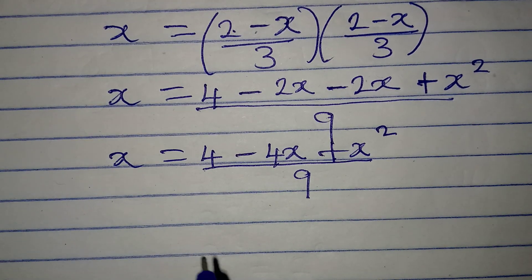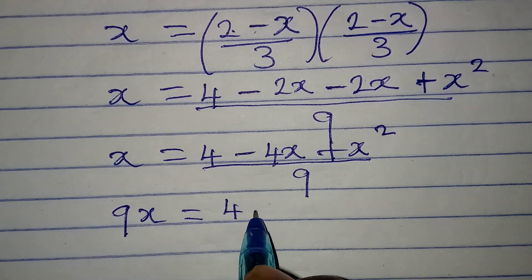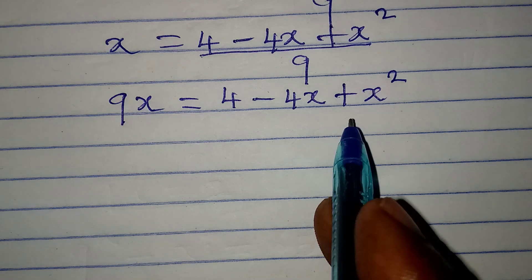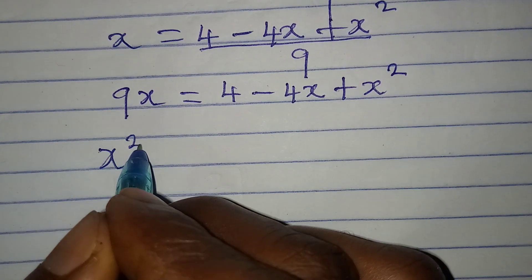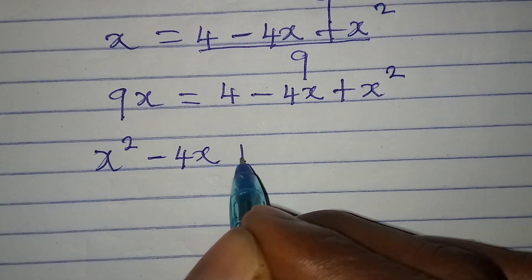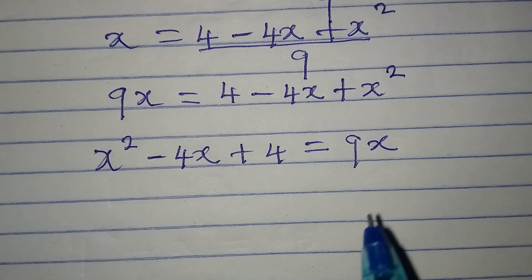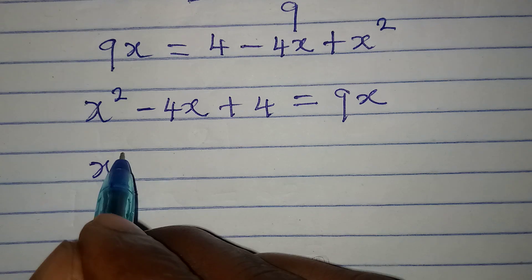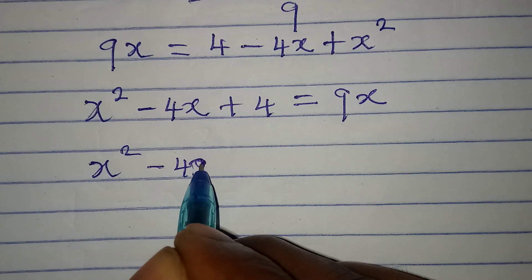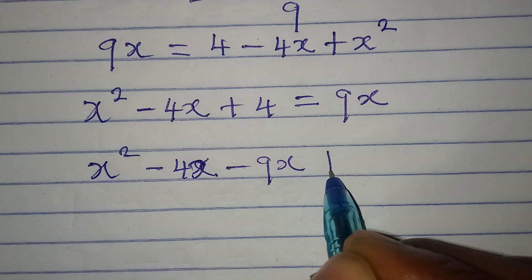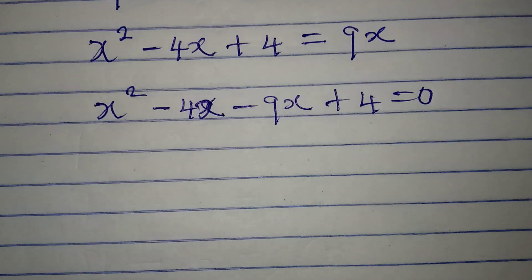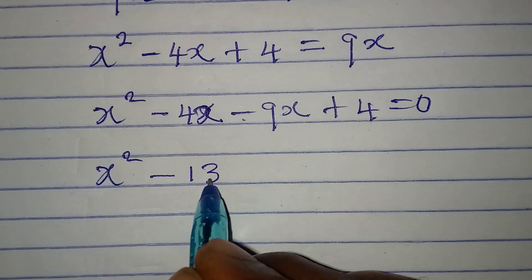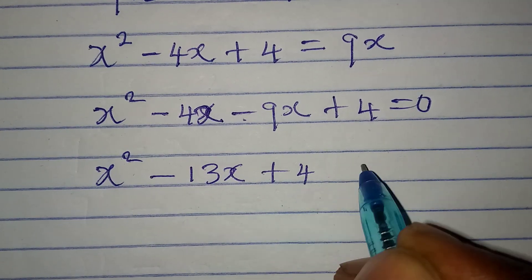Cross multiply so that 9x = 4 - 4x + x². Rearranging, we get x² - 4x + 4 = 9x. Bringing everything to the left: x² - 4x - 9x + 4 = 0, which simplifies to x² - 13x + 4 = 0.